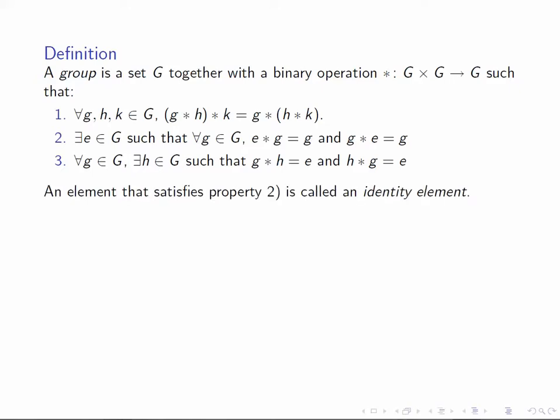An element that satisfies property 2 is called an identity element, and note that at this point we don't know that the identity element is unique. Similarly, an element that satisfies property 3 is called an inverse of g, and again we have to wait a little to determine that such inverses are unique.